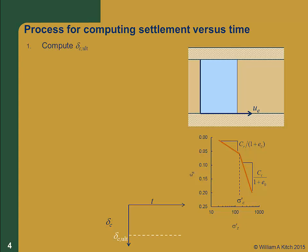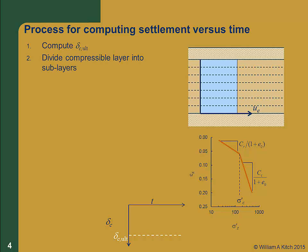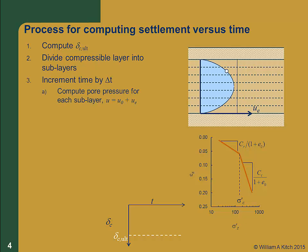The process starts by computing the ultimate consolidation settlement using the techniques we learned in Chapter 10. We then divide the compressible layer into sublayers for computations. For accurate computations, we'll need as many as 50 sublayers, but for our illustration we'll show just a few. We then start a cyclical process where we increment time by a small amount delta t. The excess pore pressure will start to dissipate as shown by the new isochrone. We now perform a series of computations for each sublayer.